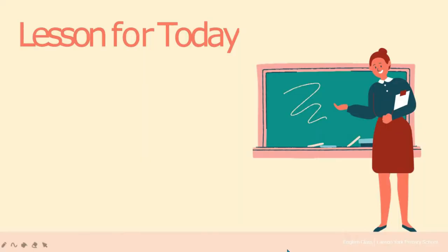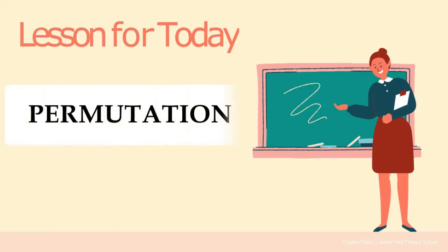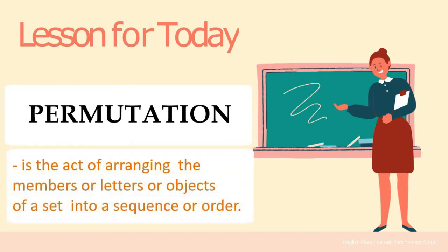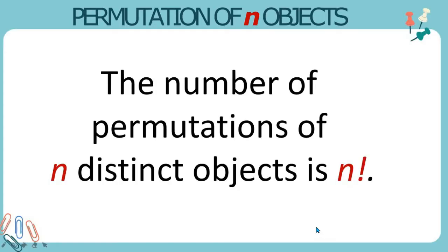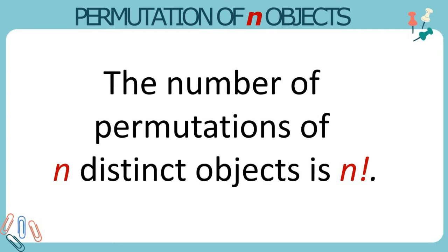Hello everyone, welcome again to my channel. Today's video is all about permutation. Permutation is the act of arranging the members, letters, or objects of a set into a sequence or order. According to the theorem, the number of permutations of n distinct objects is n factorial. Take note that we can only use this theorem if the objects we are arranging are different from one another.